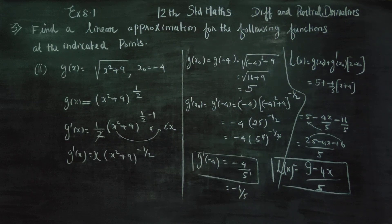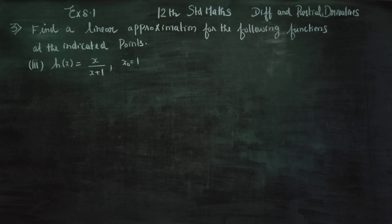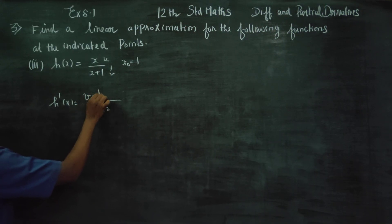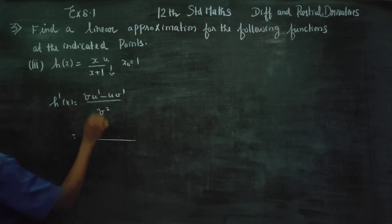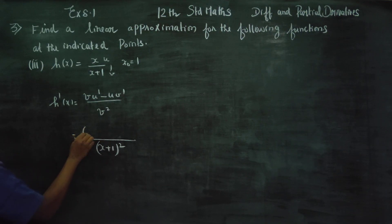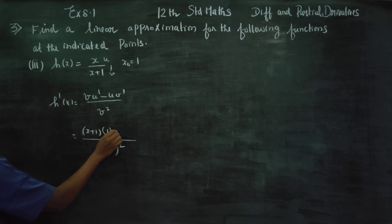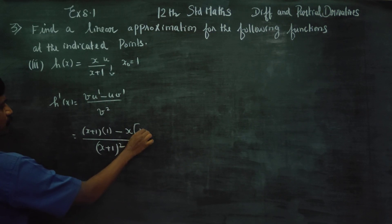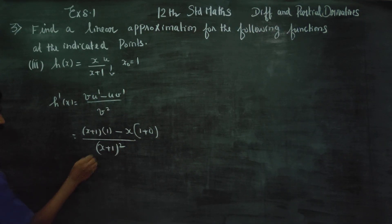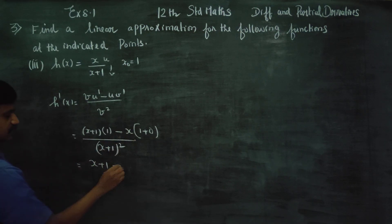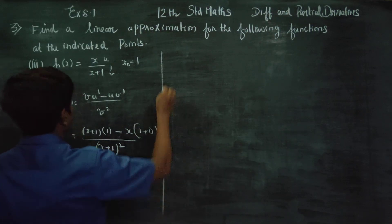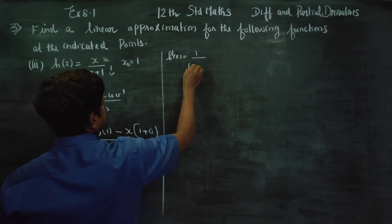Coming to the third sub-question: h(x) = x/(x+1) at x₀ = 1. Using the quotient rule (u/v)' = (v·u' - u·v')/v²: with u = x and v = x+1, we get u' = 1 and v' = 1. So h'(x) = [(x+1)(1) - x(1)] / (x+1)² = (x + 1 - x)/(x+1)² = 1/(x+1)².